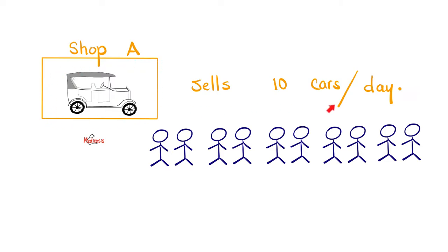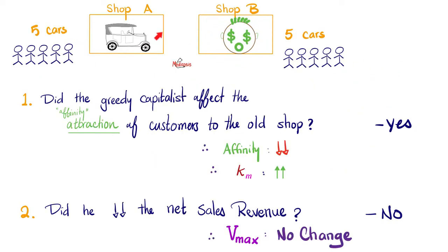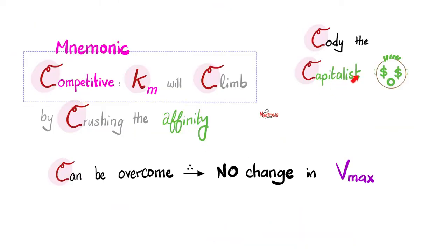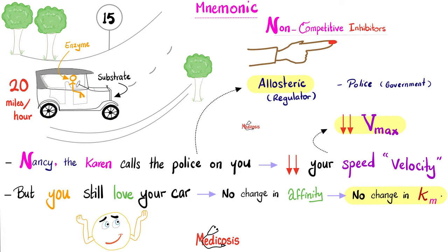Think of competitive inhibition as a shop selling 10 cars to 10 customers every day. Then Cody opens another shop next door and takes 5 customers away. The attraction of customers to the old store decreases — affinity goes down, Km goes up. But Cody did not change the net sales per day, so Vmax does not change. Cody the capitalist is competitive: Km climbs by crushing the affinity, it is reversible, and Vmax does not change.